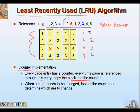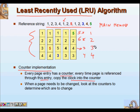When page one is accessed again, we update its counter because it is now the most recently used — we make it five. Then page two is accessed, so it becomes the most recently used with counter six. Now we need to access page five, which is not in main memory. We only have capacity for four pages, so we choose a victim page which is least recently used. Page one was used at time five, page two at six, page three at three, page four at four — page three is the least recently used, so we remove it and bring in page five with time seven.